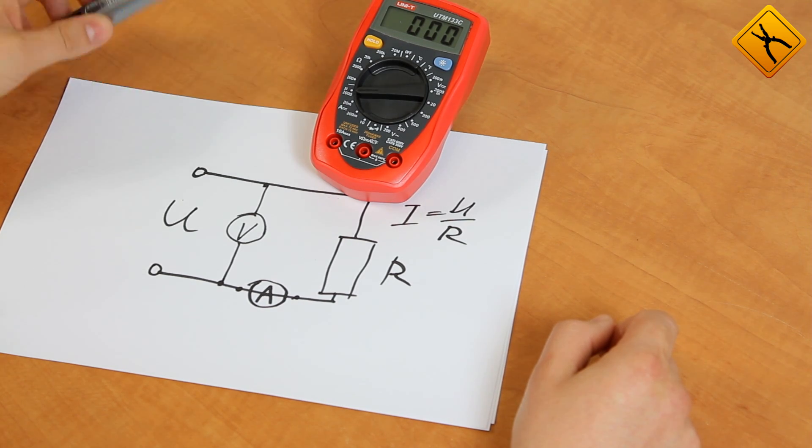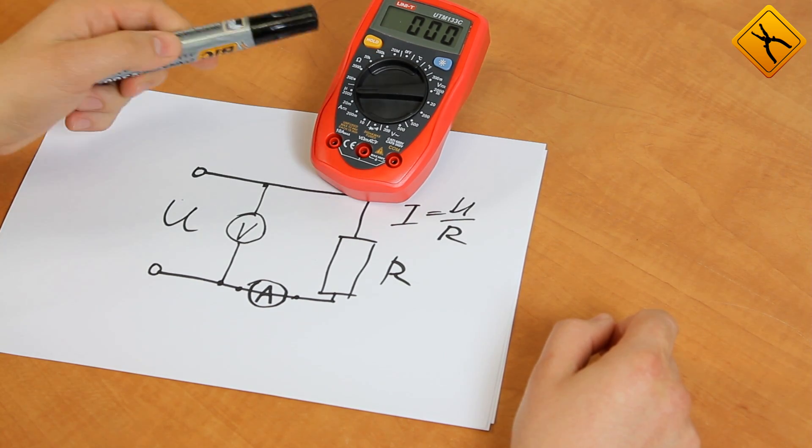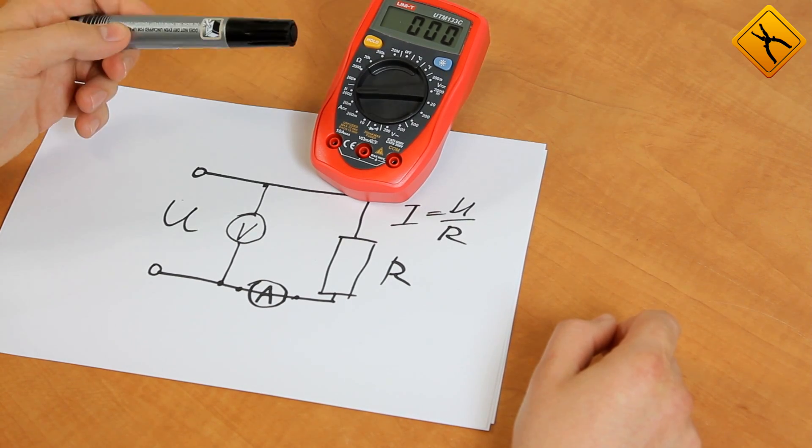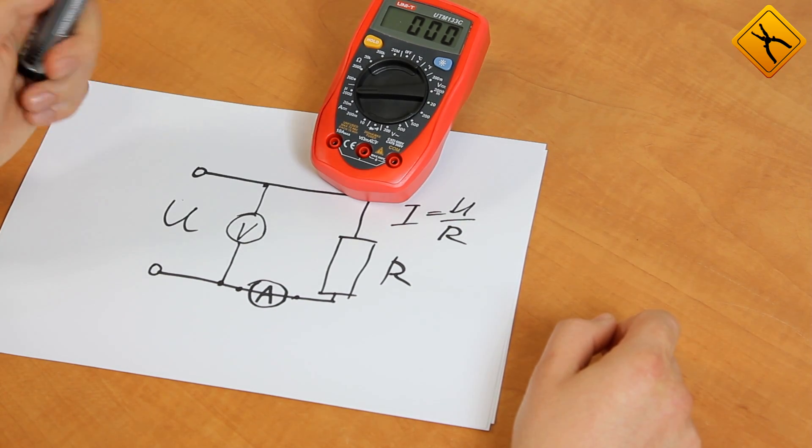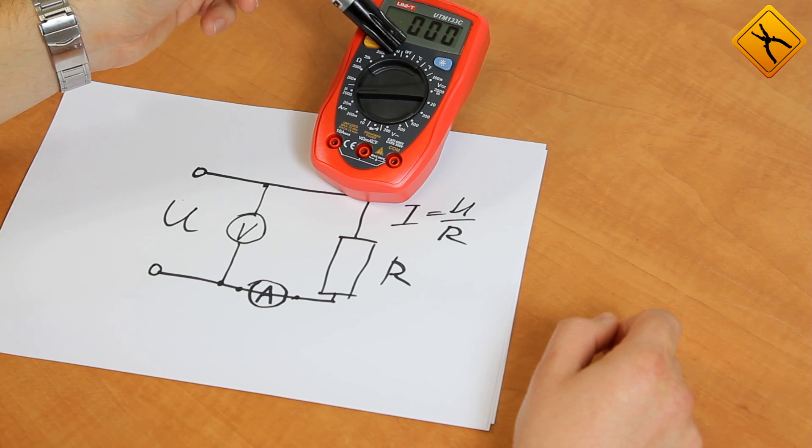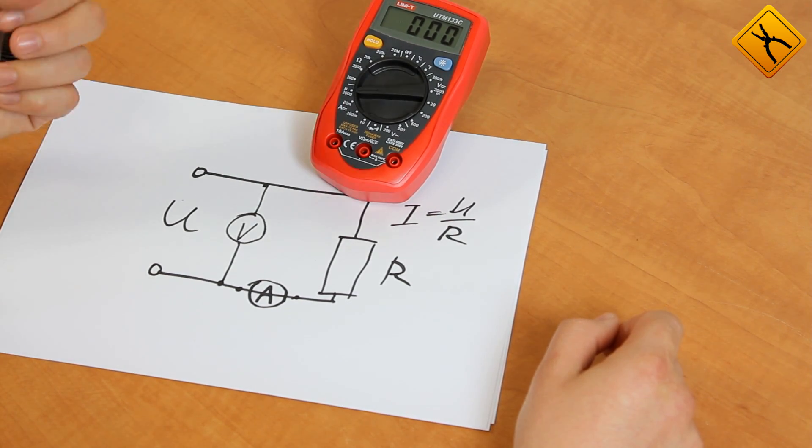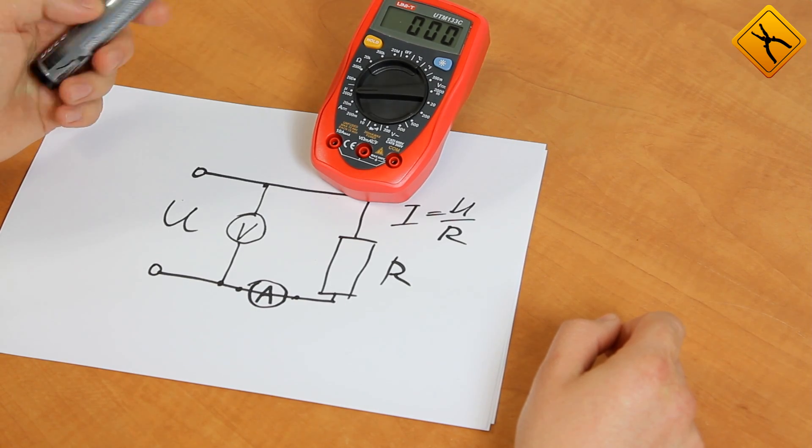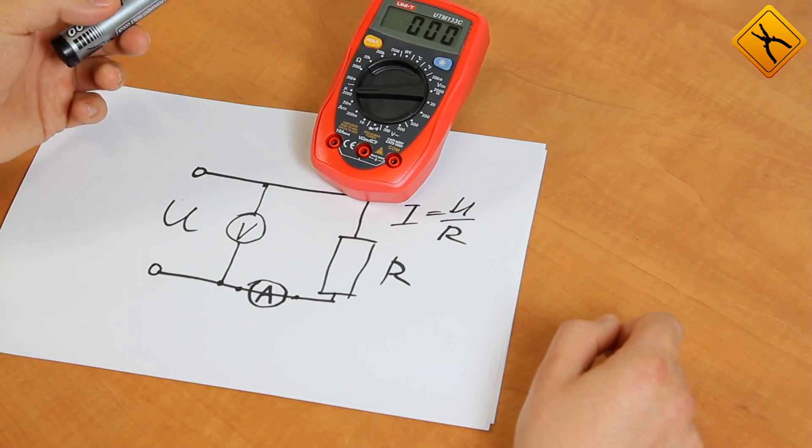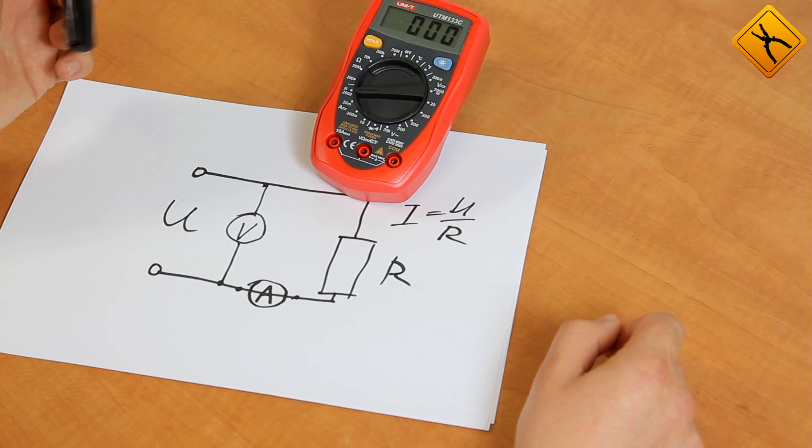Most of the modern multimeters, including this one, have a protection from input voltage. The maximum input voltage is usually specified in the manual, so you should read it carefully before you start. So as you measure resistance and the inductance and capacitance, you need to ensure there is no voltage using the same multimeter. And only after that, start the measurement.